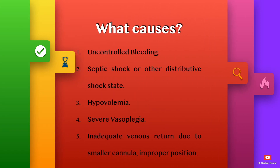What causes decreased ECMO blood flow? Uncontrolled bleeding, septic shock or other distributive shock states, hypovolemia, severe vasoplegia, and inadequate venous return due to a smaller cannula or improper positioning of the cannulas.